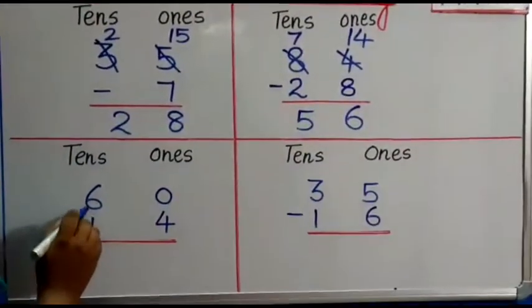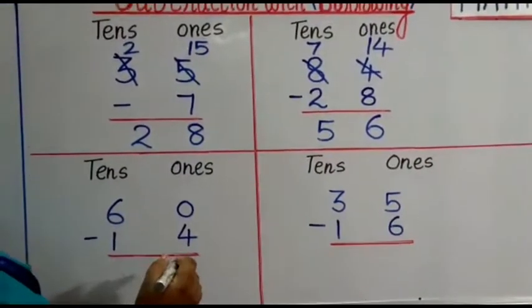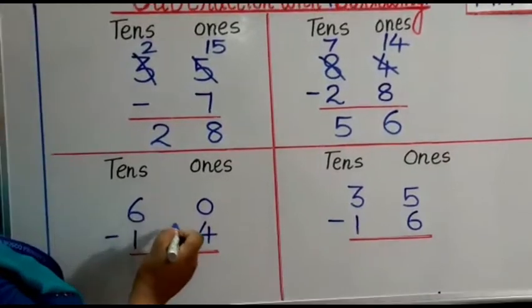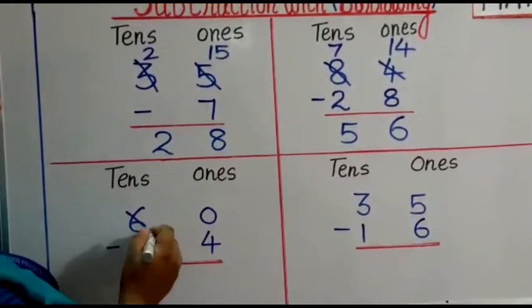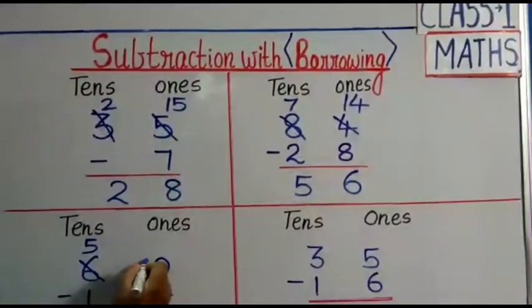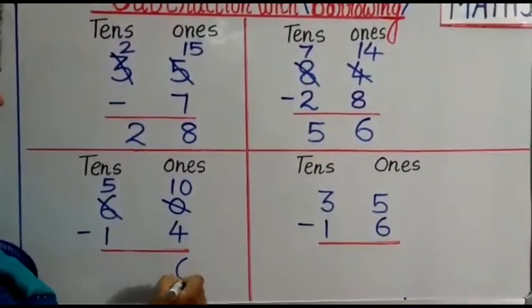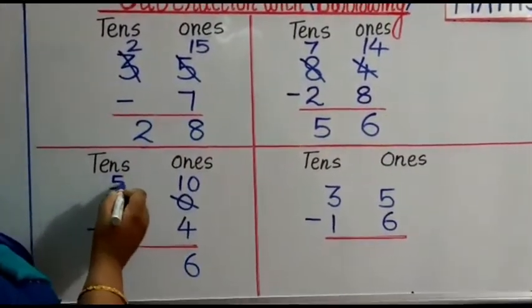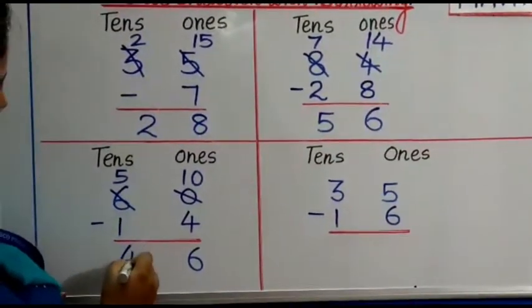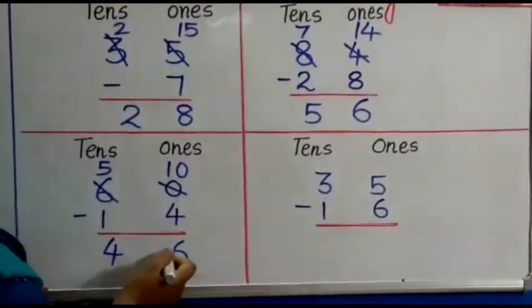Third one. 60 minus 14. Now 1 tenths we will take from 6. 6 becomes 5, and 0 becomes 10. 10 minus 4 is 6. And 5 tenths minus 1 tenths become 4 tenths. So 60 minus 14 is 46.